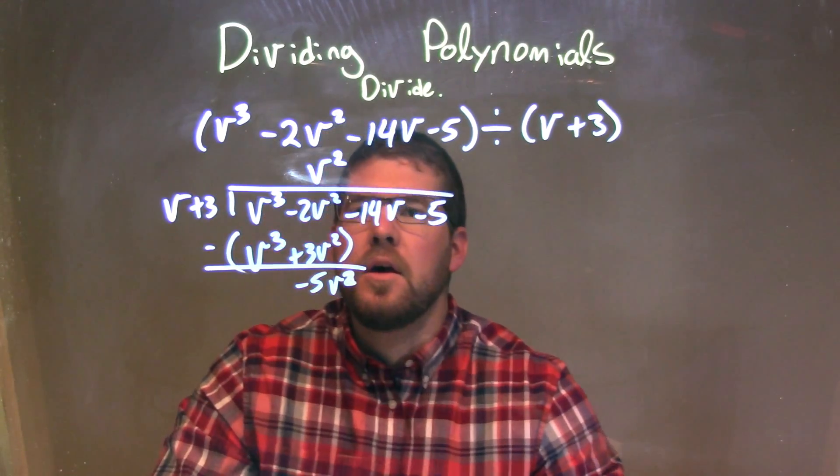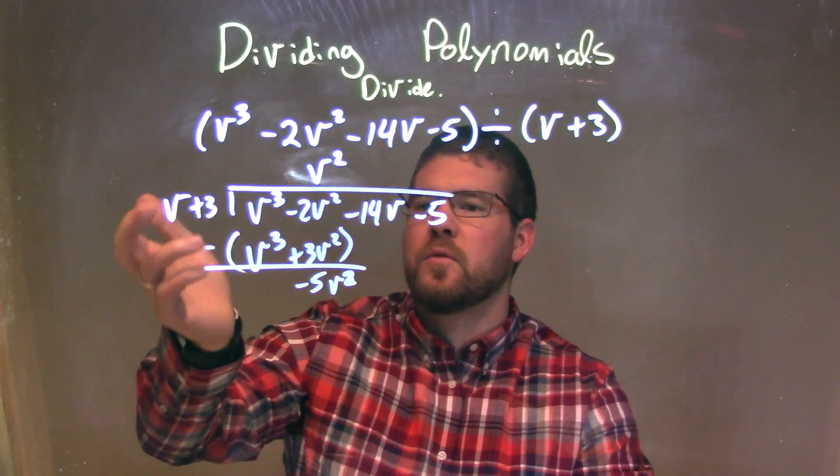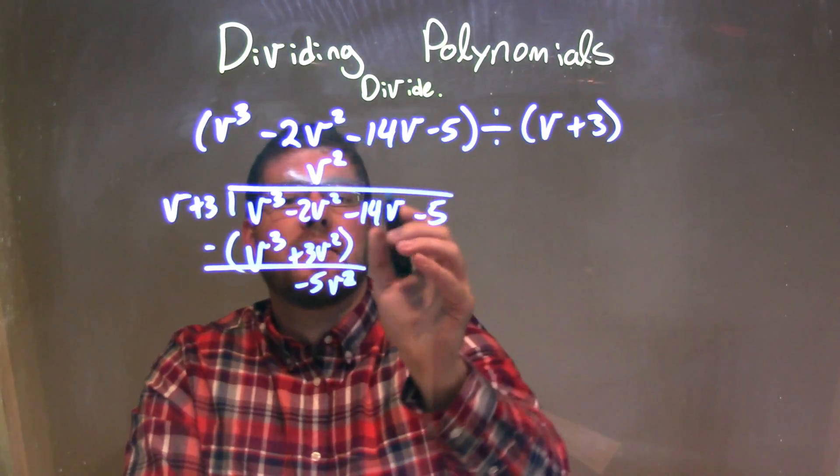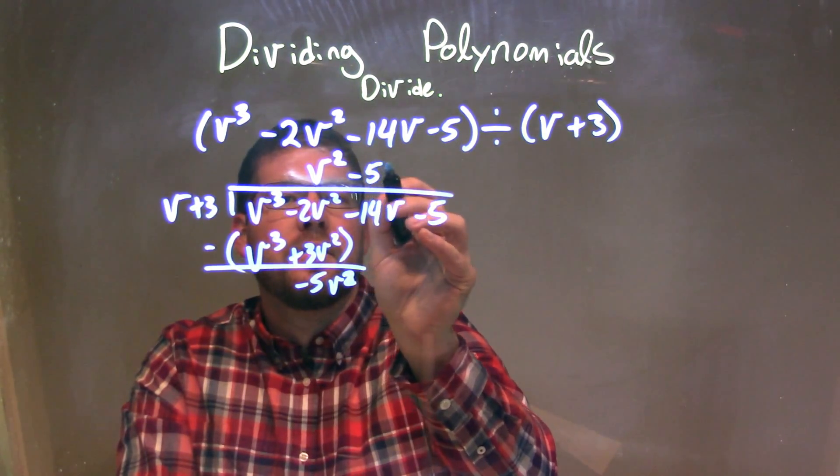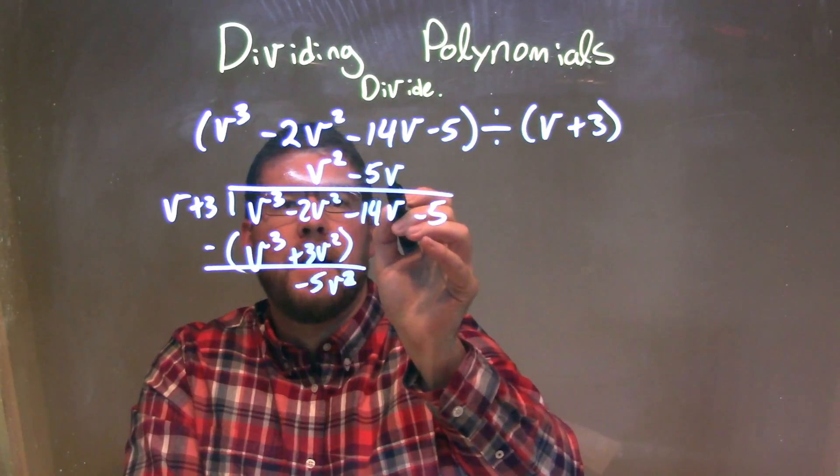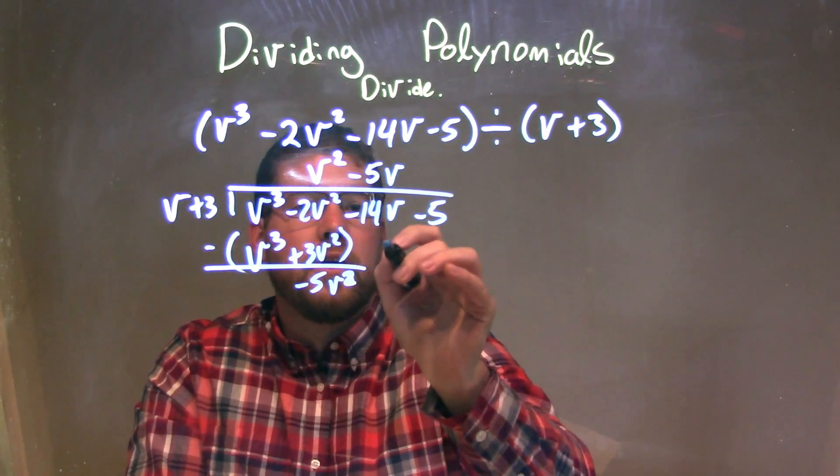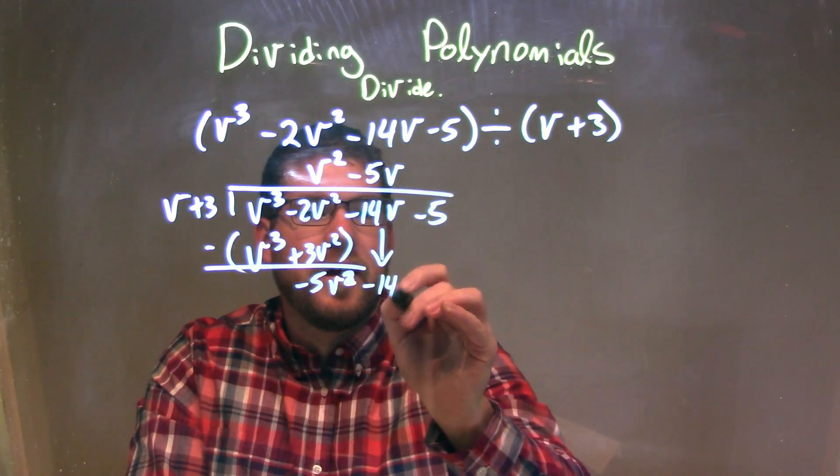So now I ask the question again, what times v gives me a -5v²? And that's a -5v. Multiply that, -5v. Oh sorry, I forgot to bring down the -14v there, don't forget that stuff.